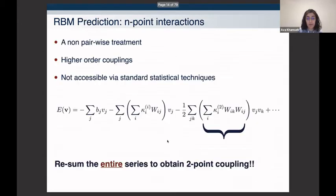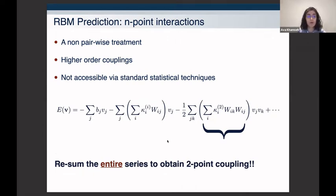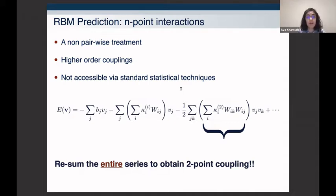Moreover, we want to go beyond pairwise treatment because if we don't know what Hamiltonian the data was generated from, we don't know how far up in higher-order interactions we need to go. In 2018, we thought this was not accessible by usual statistical techniques — requiring either a massive parametric fit or these types of machines to extract the couplings.